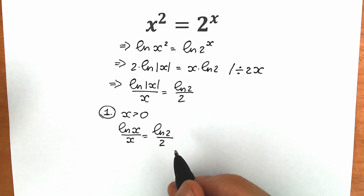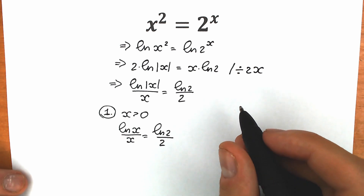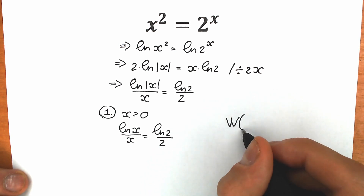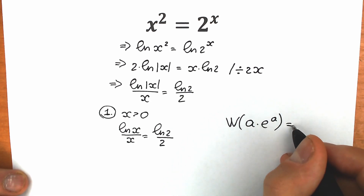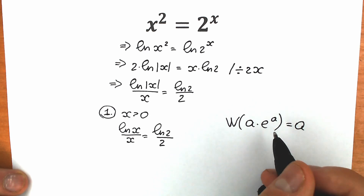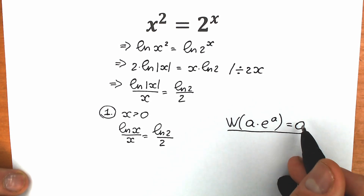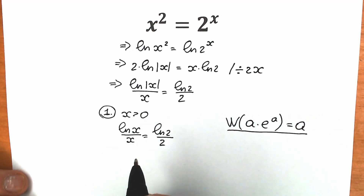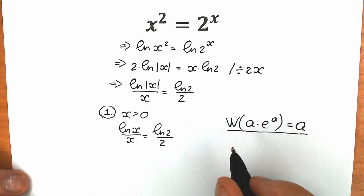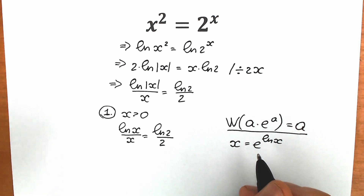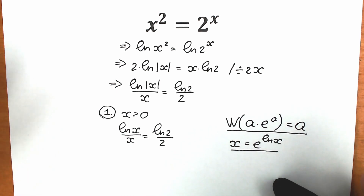How can I solve this? I'm going to apply the Lambert W function. I have a lot of videos about this Lambert W function, so let's look at it once more. The Lambert W function works like this: W of (a·e^a) equals a. So when we have e raised to the same expression, we can simplify using Lambert W. Right now, instead of x, let's write e to the power of natural log x — this is absolutely the same thing according to log properties.